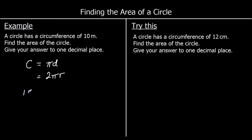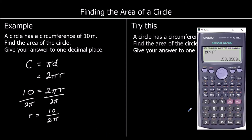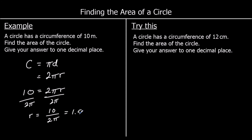The circumference, which is 10, is equal to 2 times pi times r. To get r by itself — at the moment it's multiplied by 2 pi — we divide both sides by 2 pi. So r is equal to 10 divided by 2 pi. We can find that using the calculator: I've got 1.5915 and so on. I'm going to leave that number in the calculator because I'm using it again.